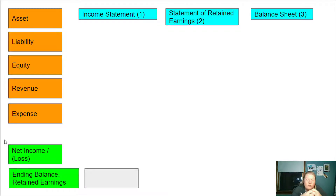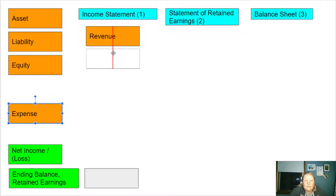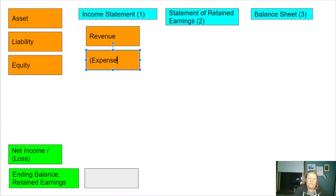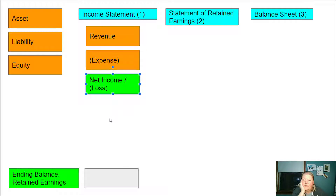The first statement we do is the income statement. The income statement tells us how much income is left over at the end of the period — whether that's a month, a quarter, or a year. I start with revenue and subtract expenses. In accounting we put brackets around expenses to show that we're subtracting them, so revenue minus expenses gives us net income or loss.